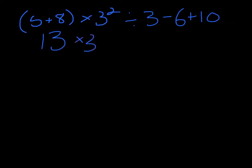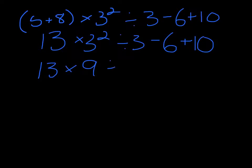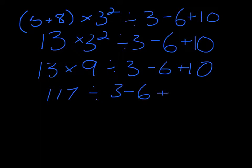13 times 3 squared divided by 3 minus 6 plus 10. 3 squared is 9, and 13 times 9 is 117 divided by 3 minus 6 plus 10.